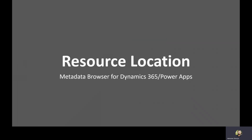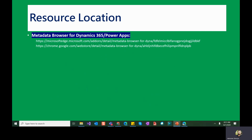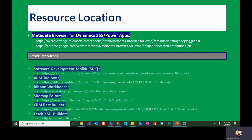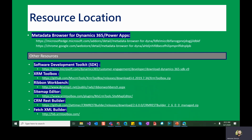Let us now see where you can download this resource. You can find both the Microsoft Edge and Google Chrome links for Metadata Browser — these will be in the description box. At the same time, you can also find other resources such as the latest Software Development Toolkit for Dynamics 365, as well as other useful tools like XRM Toolbox, Ribbon Workbench, Site Map Editor, REST Builder, and XML Builder.